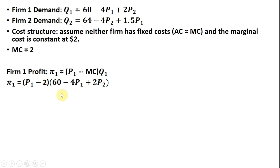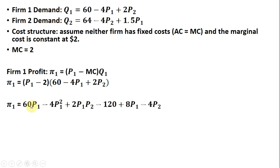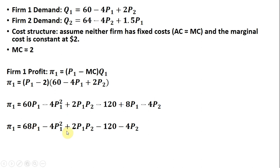The next step will just be simplifying: P subscript one times 60, P subscript one multiplied by minus 4P subscript one gives us minus 4P subscript one squared, P subscript one times 2P subscript two gives us that term, minus 2 times 60, minus 2 times negative 4P subscript one, and so on. Then I'm going to add this 8P subscript one to the 60P subscript one and we have that result.